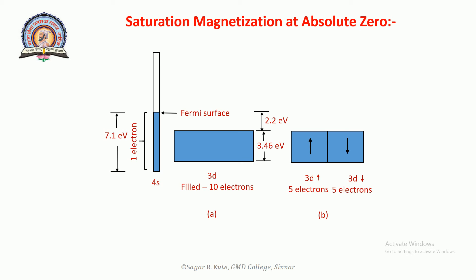Figure b shows the filled 3d band structure of copper as two separate sub-bands of opposite electron spin orientation, each band holding 5 electrons. With both sub-bands filled, the net spin of the d band is zero.